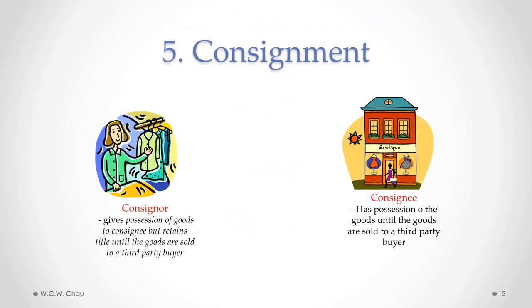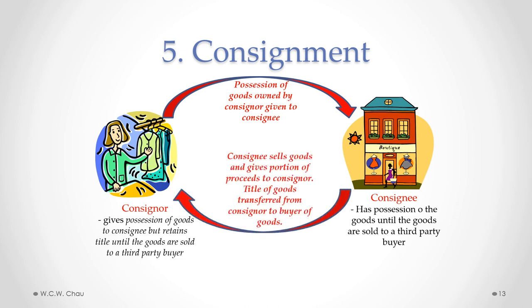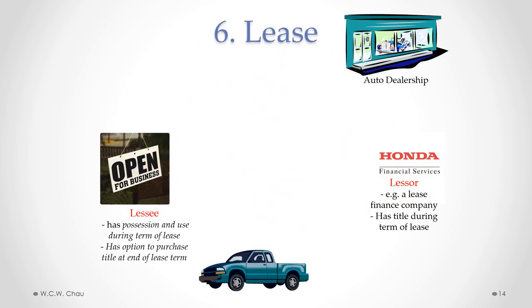Say you have old clothing you want to sell at a second-hand clothing store. You bring your clothes to the store and consign them — you give possession but not title of the goods to the store, called the consignee. You are the consignor. When the consignee sells the goods to a customer, it gives a portion of the proceeds to you, the consignor. At the time of that sale, title of the goods transfers from you the consignor to the buyer. That's what we call a consignment.